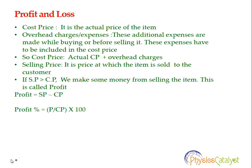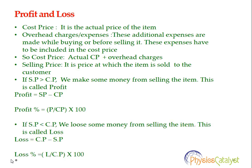Now what is selling price? It is the price at which the item is sold to the customer. If selling price is more than cost price, we make some money from selling — this is called profit. Profit is equal to selling price minus cost price, and profit percentage equals profit divided by cost price into hundred.